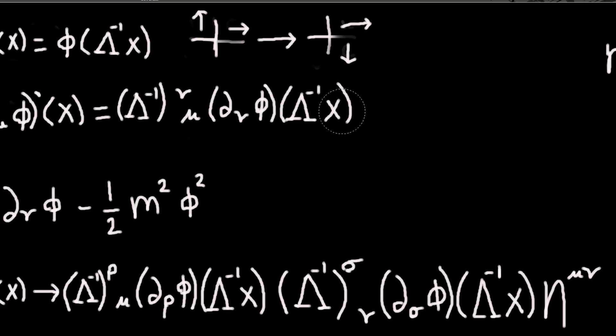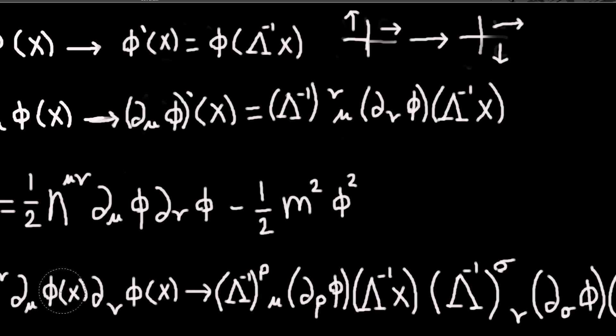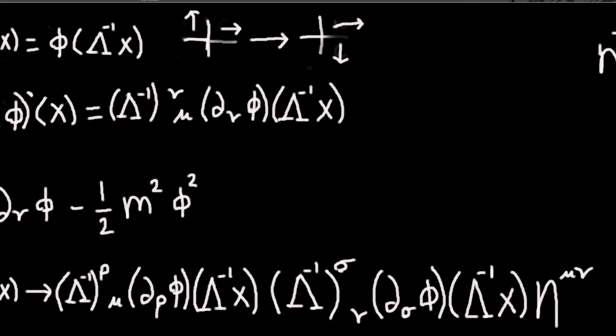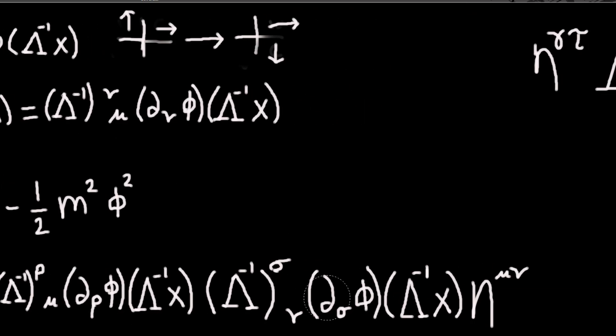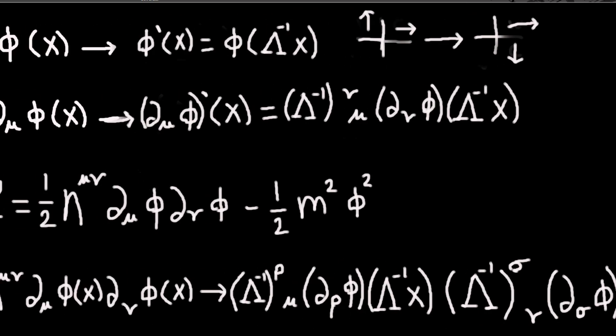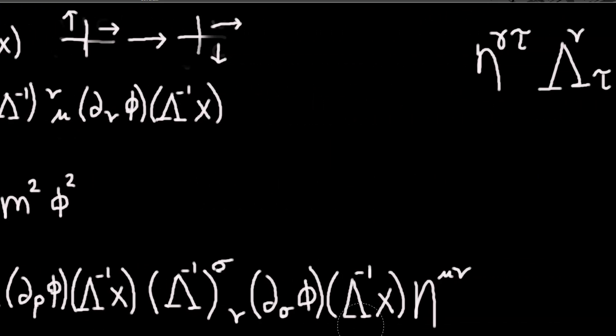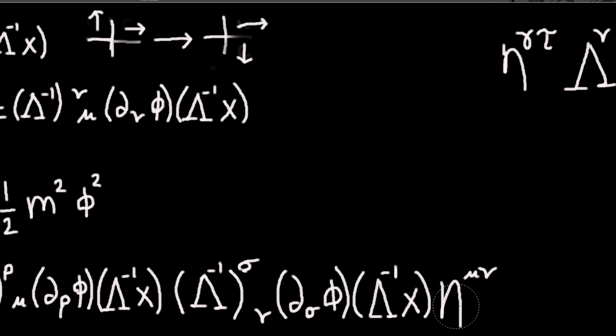So d_μ of phi just becomes d_ρ of phi but evaluated at this point instead. And we also need our inverse transformation thing. And then similarly for the d_μ of phi, it's here. And our eta mu nu just carries over, so that's still there. It doesn't depend on the coordinates, so it's still the same.